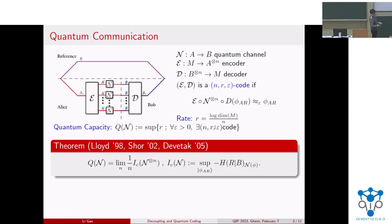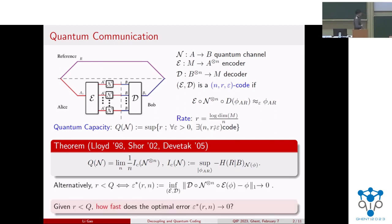It was a fundamental theorem in quantum communication by Lloyd, Shor, and Devetak that this quantum capacity can be characterized by the coherent information of the quantum channel, defined as the negative conditional entropy from the purified system to the output of the channel, with the supremum over all pure states. The quantum capacity is then given by the regularization of the coherent information because we are allowed to use tensor product codewords between different uses of the channel. In this talk, the regularization is not our focus. We want to consider the question: if we are given rates below the quantum capacity, how can we know the optimal error — that is, how fast it decays with the number of uses of the channel?